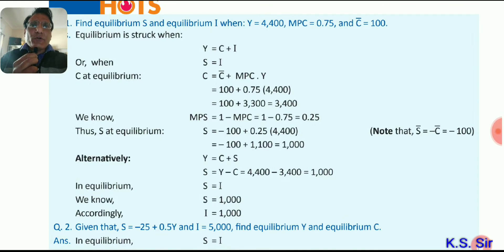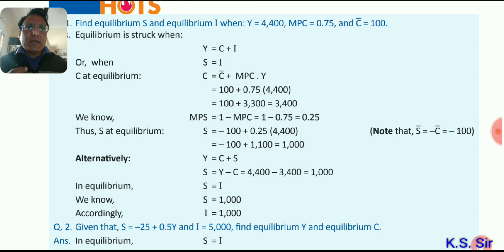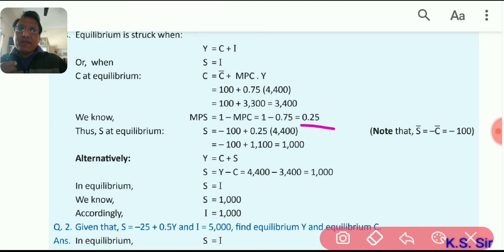Higher order thinking question. Find equilibrium saving and equilibrium investment when Y equals 4400, MPC equals 0.75, and autonomous consumption is 100. Apply the formula Y equals C plus I, and S equals I at equilibrium. Using the consumption function with all values gives consumption of 3400. Then MPS equals 1 minus MPC equals 1 minus 0.75 equals 0.25. Applying the saving function gives equilibrium investment. The answer is 1000.